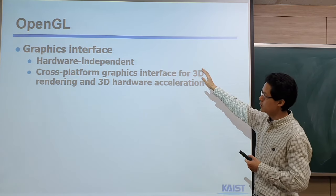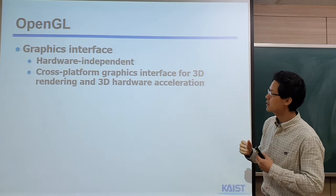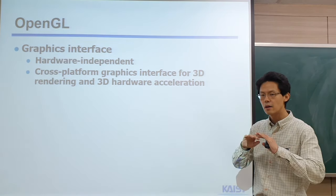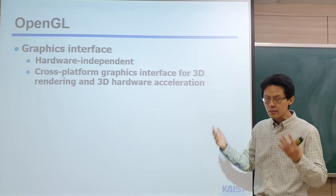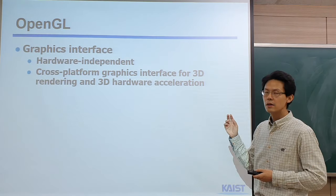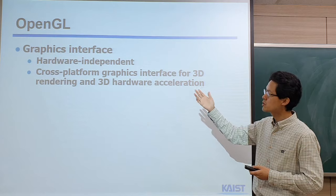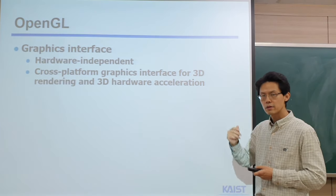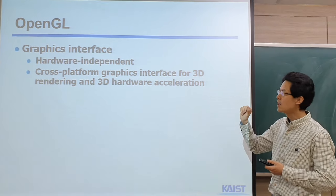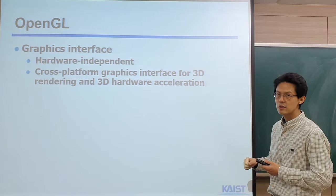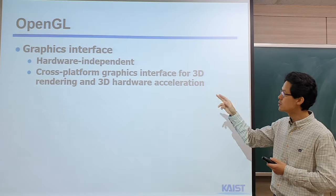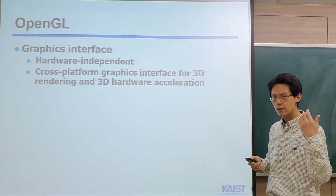OpenGL is a kind of graphics library — a graphics interface through which we can do rendering. Initially, OpenGL was designed to run on many different devices, not just PCs — they aimed for running on Linux and other systems. It's not OS-dependent; we can run OpenGL on Windows, Linux, and even Android phones. It is actually a cross-platform graphics interface for 3D rendering, and by using OpenGL, we can utilize the underlying 3D hardware acceleration. If your cell phone has a fast GPU, your OpenGL program can utilize that underlying 3D hardware.